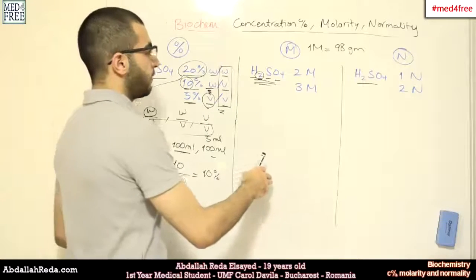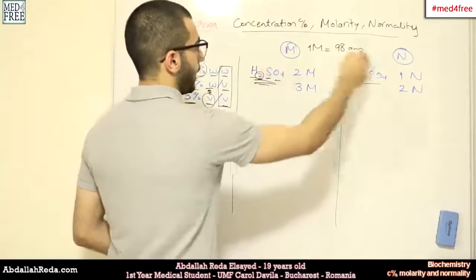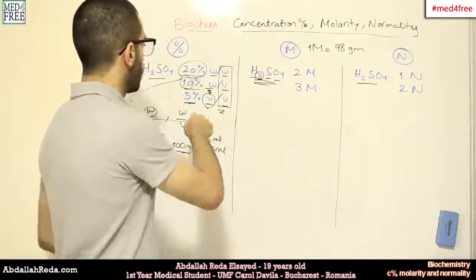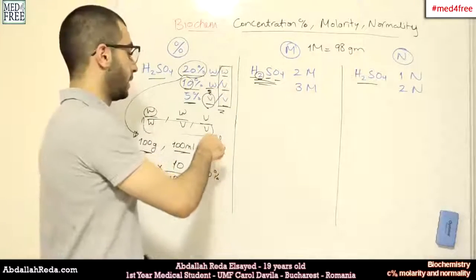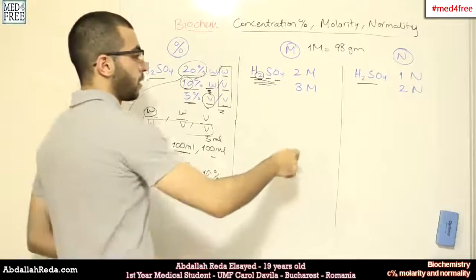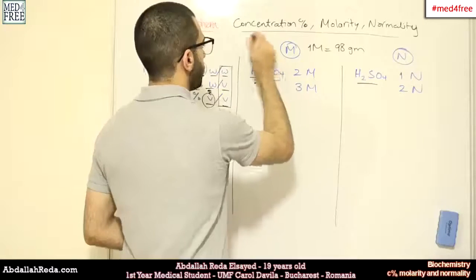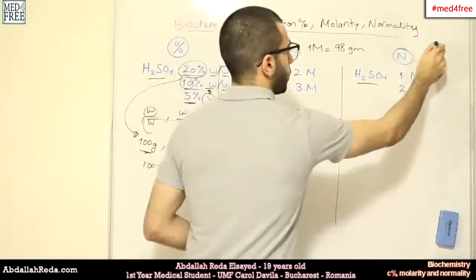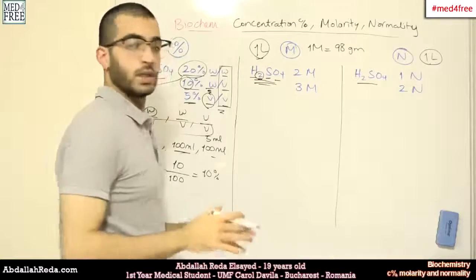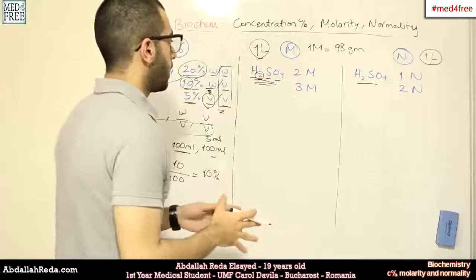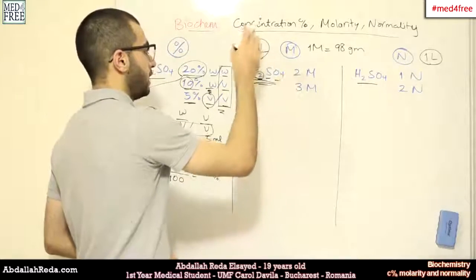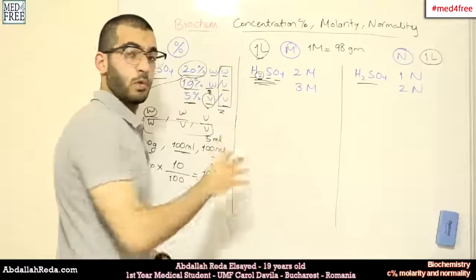The next thing that we have is the molarity and the normality. The molarity is very, very simple. As we mentioned here, we're dealing with 100 milliliters or 100 grams. Here, we're always dealing with 1 liter. So, if I mention the normality or the molarity of a solution without mentioning the amount of grams, then I mean that this is contained in 1 liter. No more, not less.